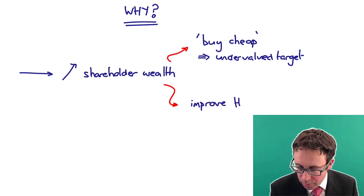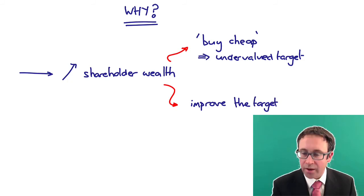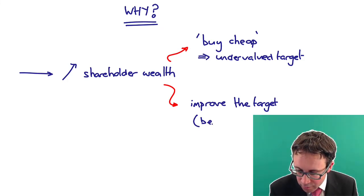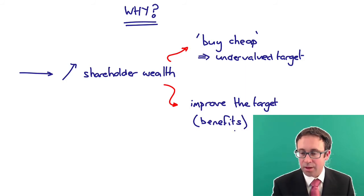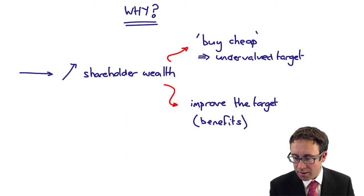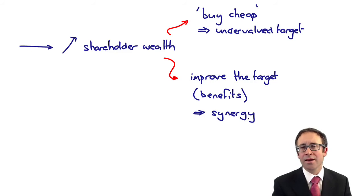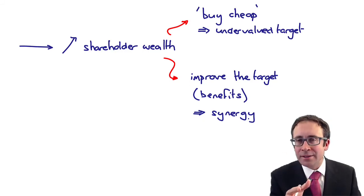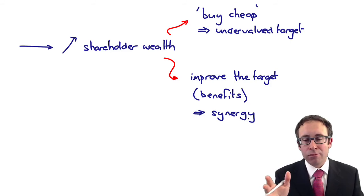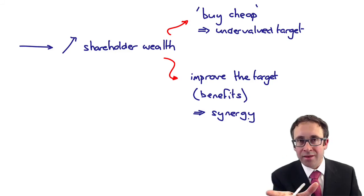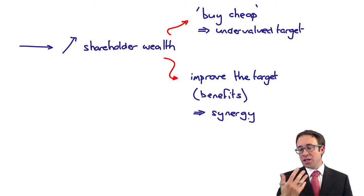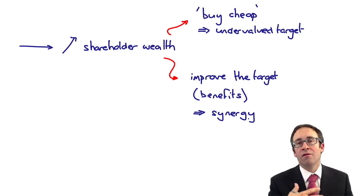The other reason why we think we can increase shareholder wealth is that we can improve the target. We think that there are some form of benefits that can be had with regards to improving that target, and we like to give that a fancy name - we think that there is some synergy that exists within the business. The old idea that 2 plus 2 is 5. I know it's not - 2 plus 2 is 4, my mental arithmetic isn't that bad. But 2 plus 2 is 5 because when I take the profits of the predator of 2, profits of the target of 2, you add them together, that's 4. There must be an additional $1 million worth of synergy, benefits, gains that can arise from the acquisition.